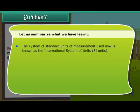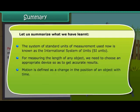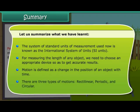The system of standard units of measurement used now is known as the International System of Units or SI Units. For measuring the length of any object, we need to choose an appropriate device to get accurate results. Motion is defined as a change in the position of an object with time. There are three types of motions: Rectilinear, periodic and circular.